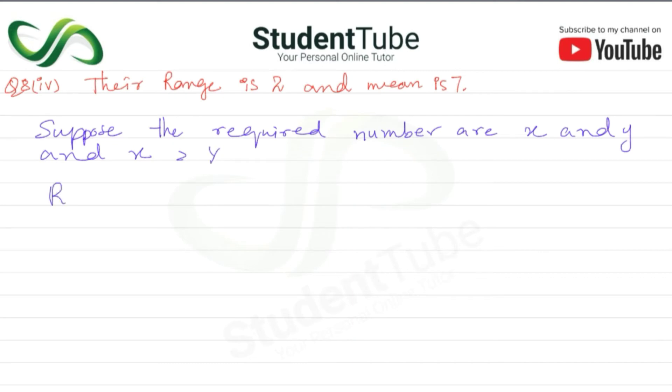So R is equal to x maximum minus x minimum. So here the range is given. R is equal to x minus y. So 2, range dv is equal to 2. Okay, equation 1.